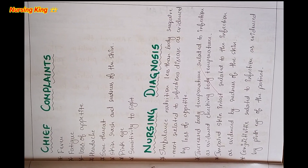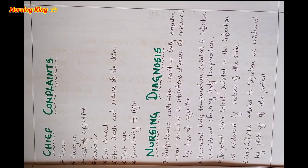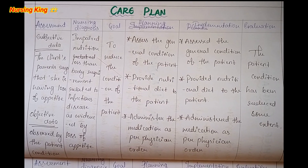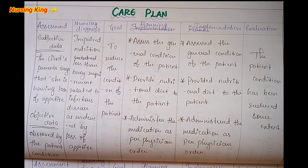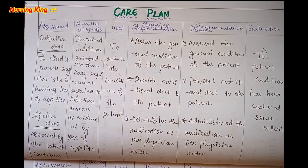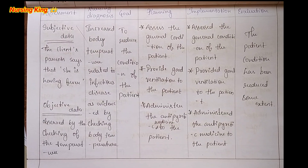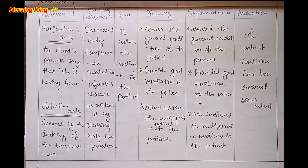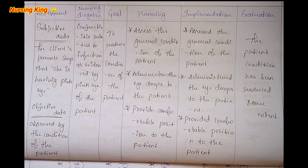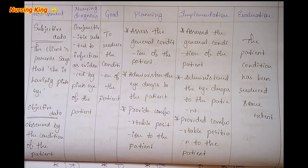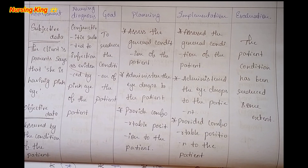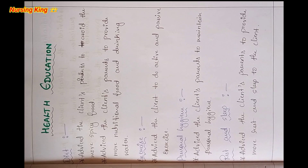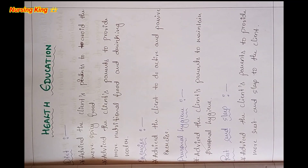After physical examination, you have to mention the chief complaint and nursing diagnosis. Depending on the patient's chief complaint, you have to mention the nursing diagnosis. And depending on the nursing diagnosis, you have to mention the nursing care plan — for each nursing diagnosis, minimum one and maximum five nursing care plans you can write.